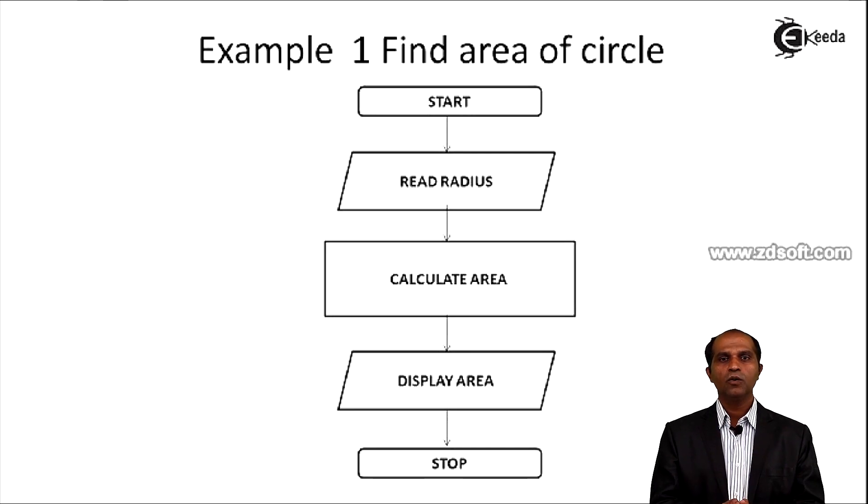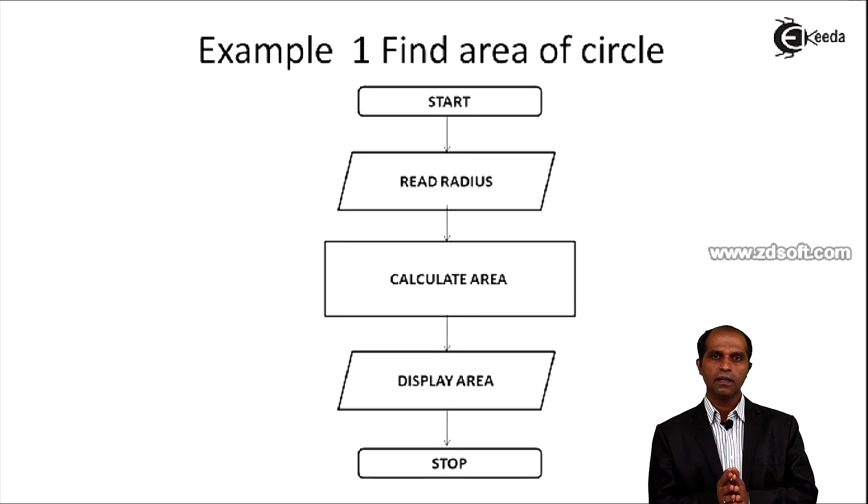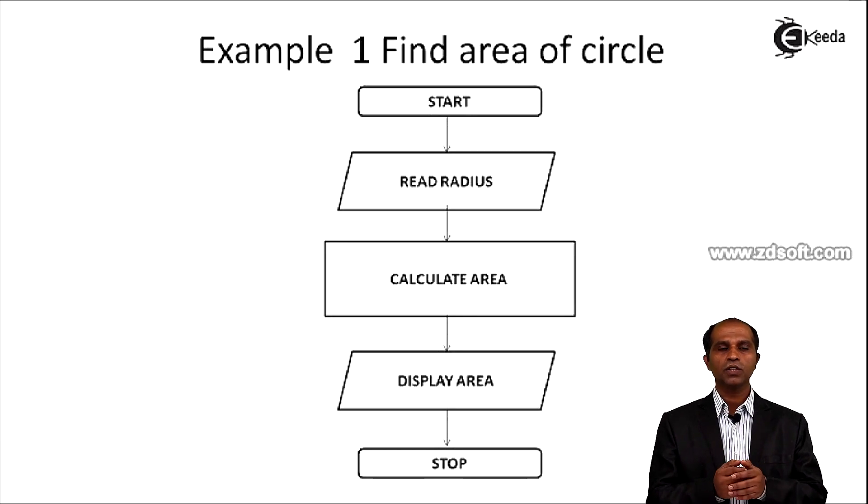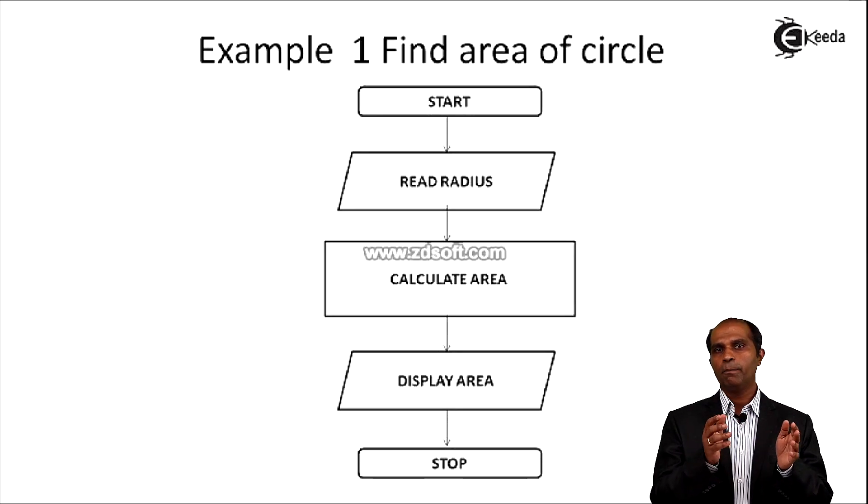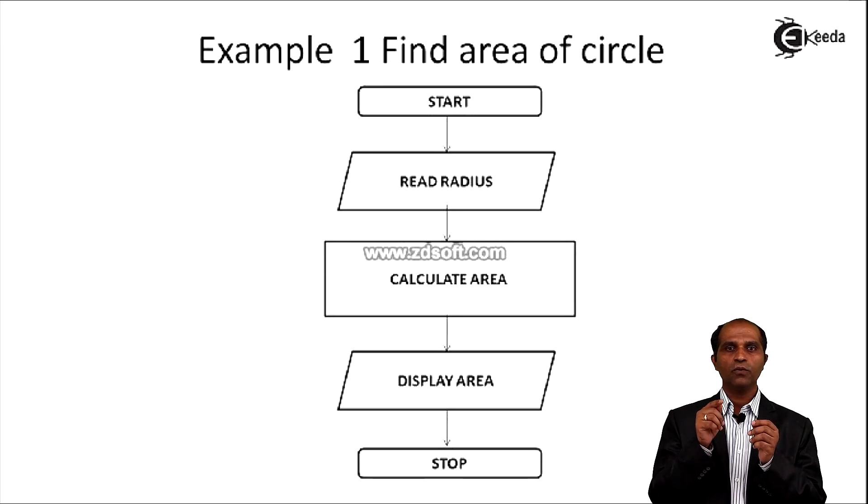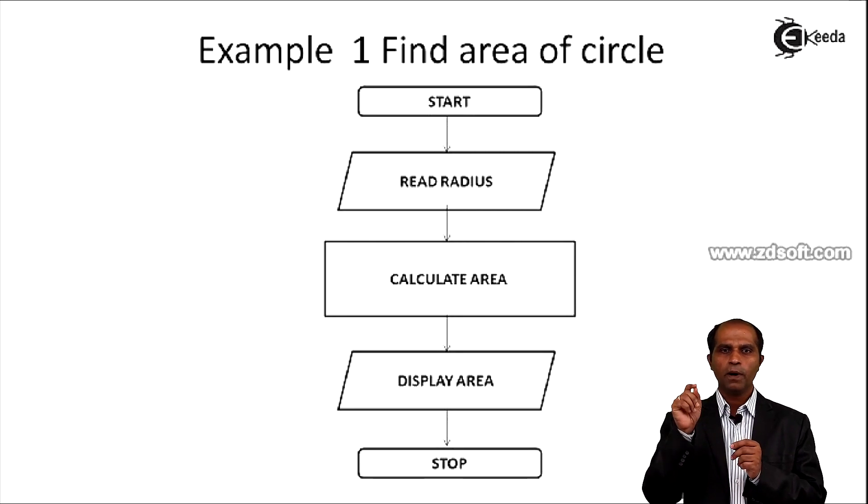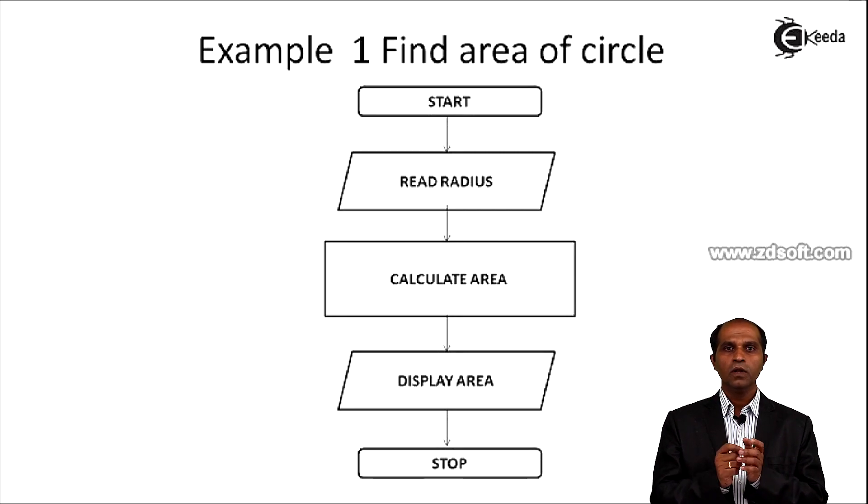Then you can have a rectangle to indicate the calculation part. The area is calculated. In some flowcharts, you can put the entire mathematical formula pi r square. So you can have 3.14 asterisk r asterisk r if I have a language influence on the flowchart, or you can use a simple mathematical formula pi r squared.